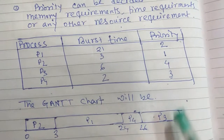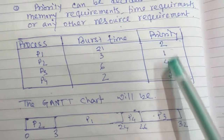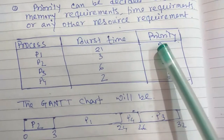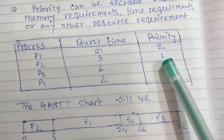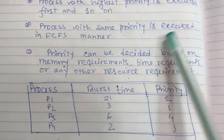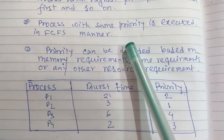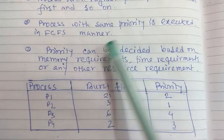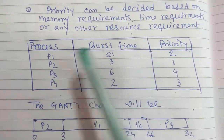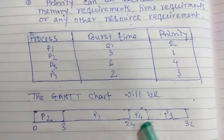If two processes have the same priority — suppose P1 and P2 both have priority 2 — then those processes with the same priority are executed in FCFS manner. But here different processes have different priorities, so this will be the Gantt chart.